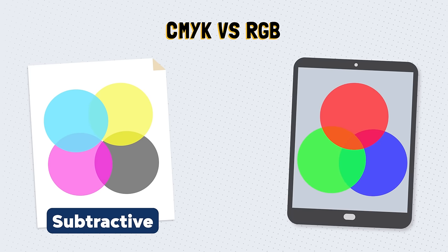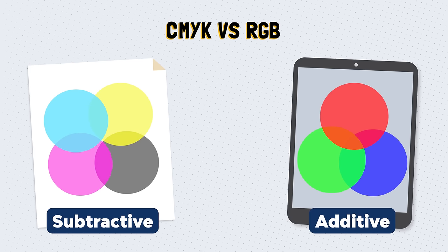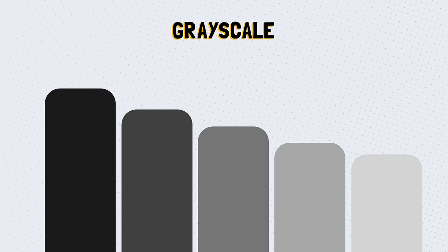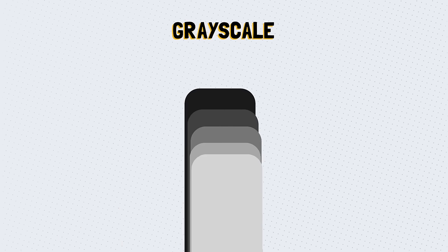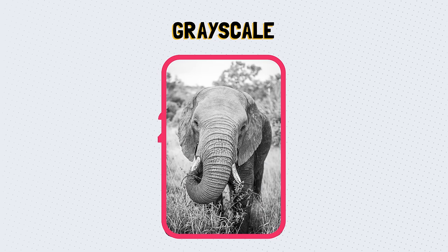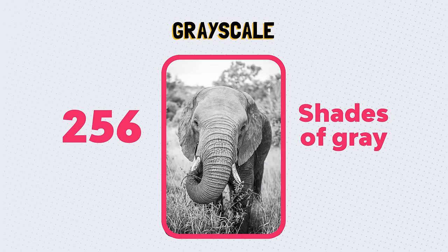RGB colors are used on screen only. It stands for red, green, and blue. This color mode is additive, meaning that by mixing these primary colors in different combinations, we can simulate a bigger range of colors. Grayscale is a monochromatic palette using different shades of gray in an image. A single image is composed of up to 256 combinations of shades of gray.